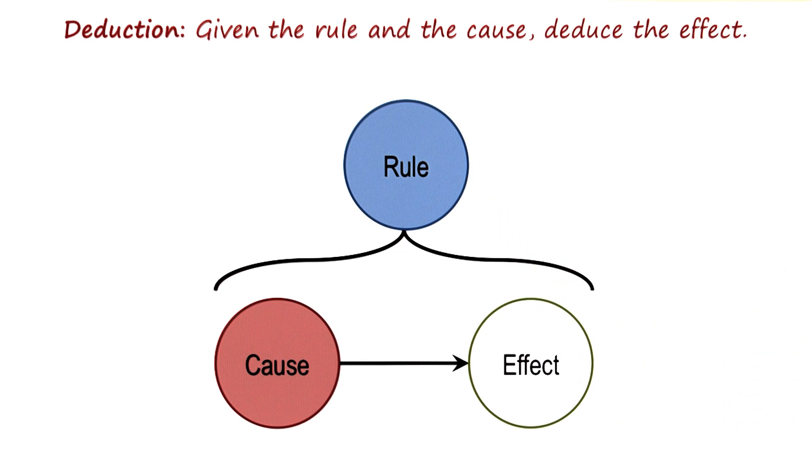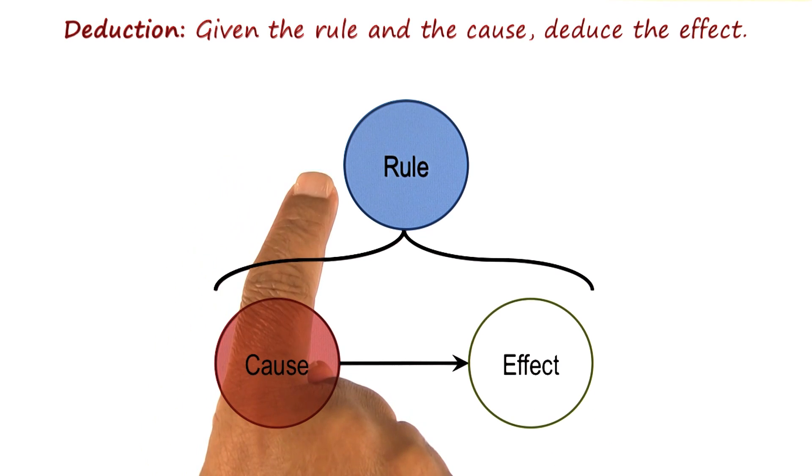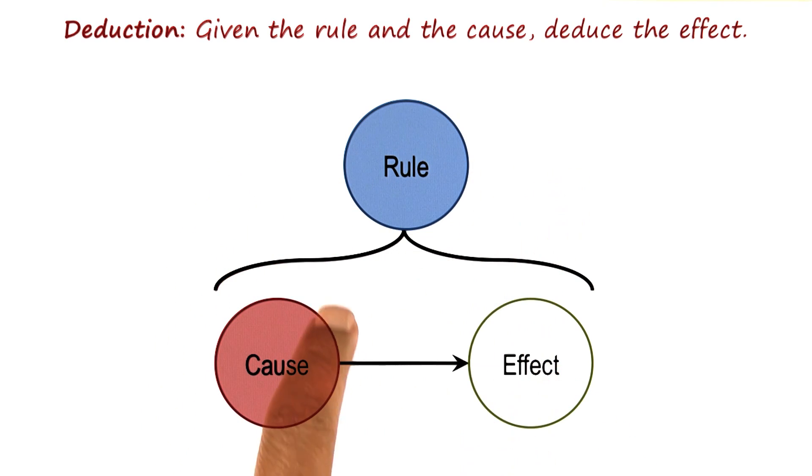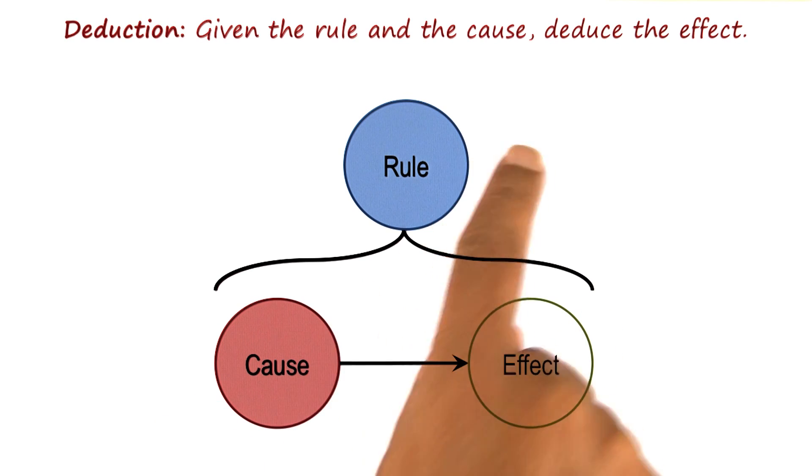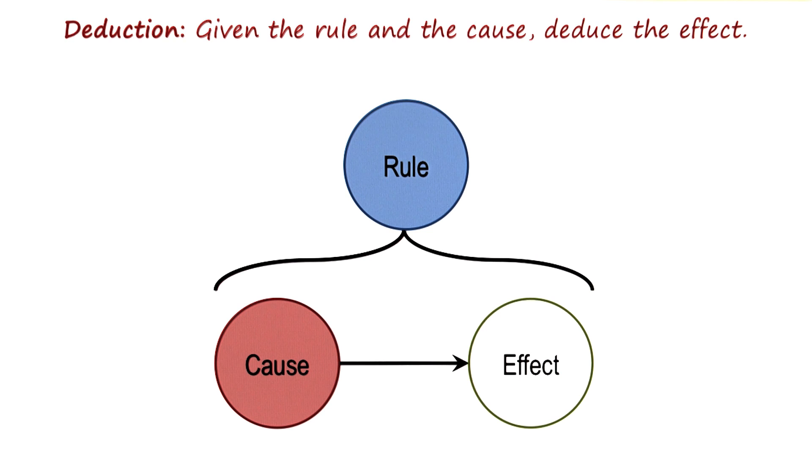Similarly, in our rule that Bob hates Joe, we can say that if Joe just walked in, we can deduce that Bob will leave. Or if the rule is, if flu, then fever, and we know that Ashok has flu, then we can deduce that Ashok has fever. This is simply an instance of modus ponens, and we discussed this in detail when we were talking about logic.